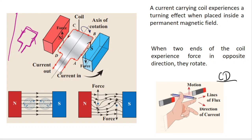The direction of current in A, B is in the opposite direction, so the force on A, B is in the downward direction. When two ends of the coil experience force in opposite directions, they rotate. So C, D experiences upward force and A, B experiences downward force — the coil starts to rotate. This is the DC motor working principle.